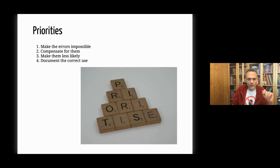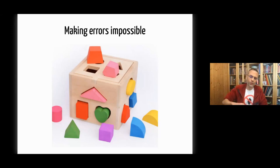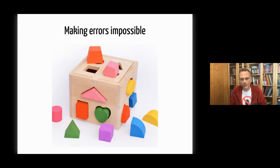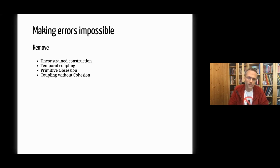Making errors impossible — it's like a child's game where you can't put the wrong thing in the wrong hole. That's what we want to achieve with code. There are a few ways: remove what I call unconstrained construction — building invalid objects — and remove temporal coupling to make it impossible to do things in the wrong order.